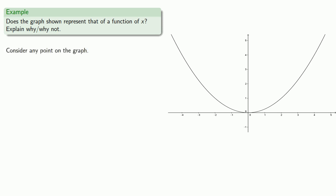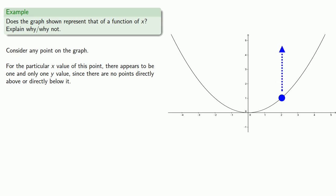Consider any point on the graph. How about this one? This particular point has a particular x value. For the particular x value of this point, there appears to be one and only one y value, since there are no points directly above it or directly below it. Whatever determines the y values of the points appears to give a unique value of y for any x. So this is the graph of a function of x.